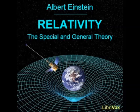Section 22: A Few Inferences from the General Principle of Relativity. The considerations of Section 20 show that the general principle of relativity puts us in a position to derive properties of the gravitational field in a purely theoretical manner. Let us suppose, for instance, that we know the space-time course for any natural process whatsoever, as regards the manner in which it takes place in the Galilean domain relative to a Galilean body of reference K.